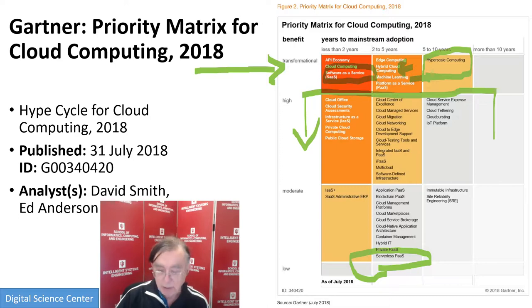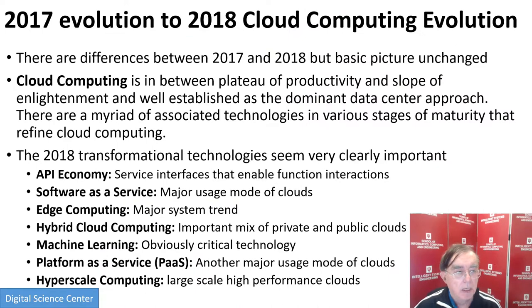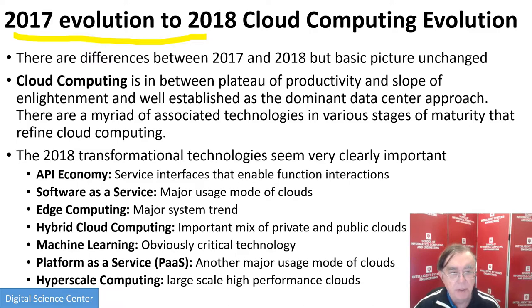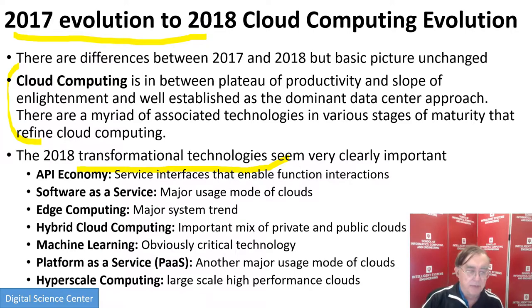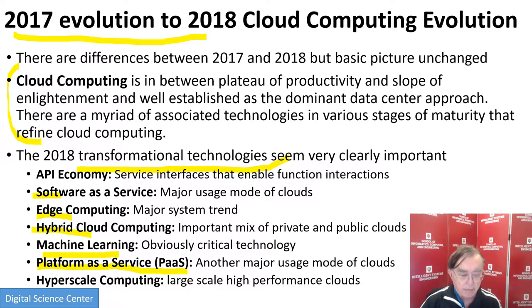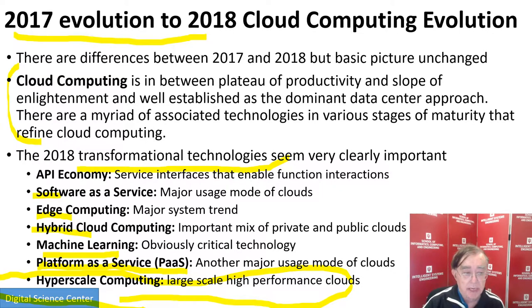This slide compares 2017 to 2018, which are pretty similar. Cloud computing is sometimes in and sometimes out. The transformational technologies in 2018 seem to have been highlighted better than in 2017. What's important: applying things as a service, edge computing, hybrid cloud computing, machine learning, platform as a service — building software that just enables other software to be written — and hyperscale computing, making everything support the largest possible capabilities. That's where the action is, and that's what you would use to build your continuous collaborative computing.